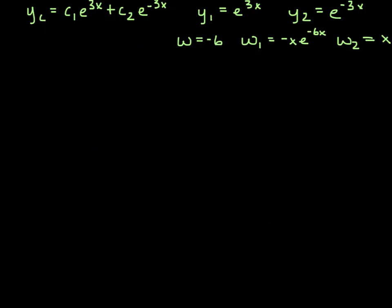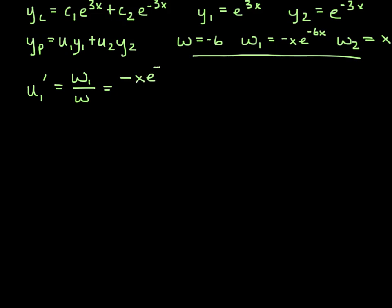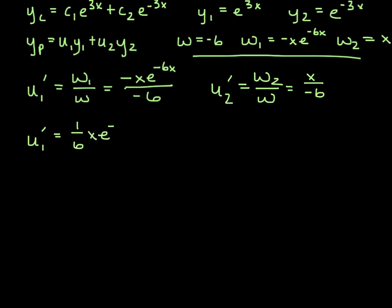Okay, so now based on everything that we have, so we're trying to develop the particular solution. Remember y sub p is going to equal u1 times y1 plus u2 times y2. We already have y1 and y2. So now we use the ideas from the Wronskians to develop u1 and u2. So remember u sub 1 prime, the derivative, is going to equal w1 over w. In other words, negative x e to the minus 6x over negative 6. And then u sub 2 prime, so the derivative of u sub 2 is w2 over w, giving us x over negative 6. So we'll go ahead and say, so u sub 1 prime is equal to 1 6th x e to the minus 6x.